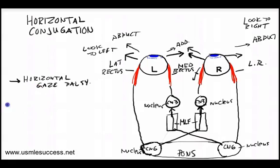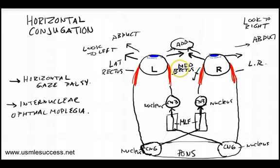Then we have another condition, and this is highly tested on the USMLE, known as internuclear ophthalmoplegia. And this condition has to do with something wrong with our MLF, our medial longitudinal fasciculus. And what is going to result from this is a problem with adduction.